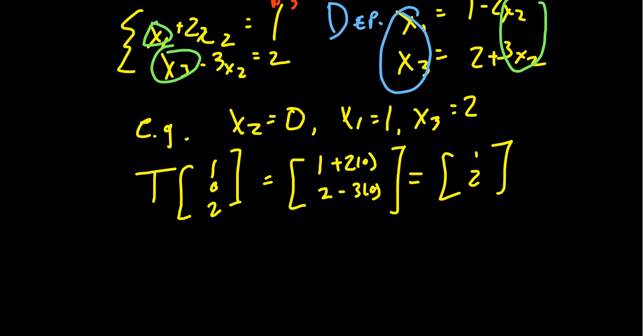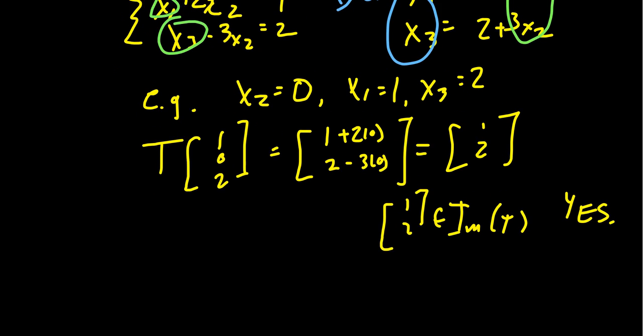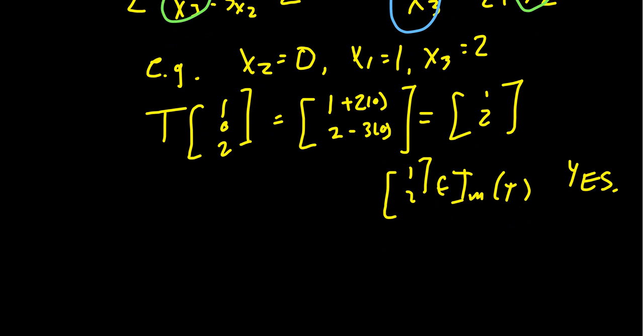And so what have we learned here? First of all, we have learned that the vector (1, 2) is in fact inside the image of T. So the answer to that question was yes. But we also learned along the way that for any vector, for all vectors b inside of the codomain R²,